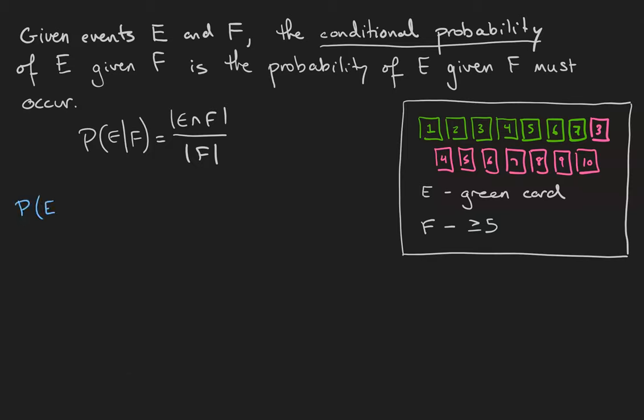the probability that we draw a green card, given that the card's value is at least 5, is the number of green cards at least 5 divided by the number of cards that are at least 5.